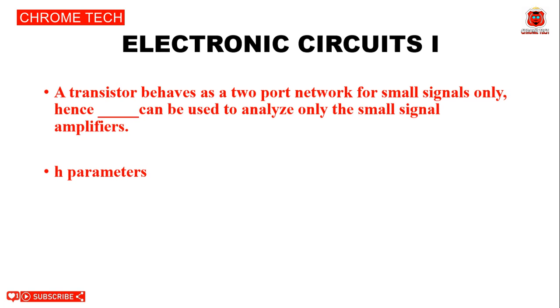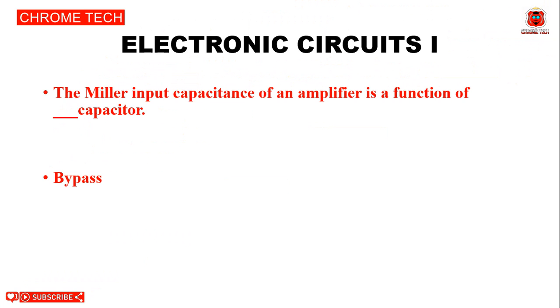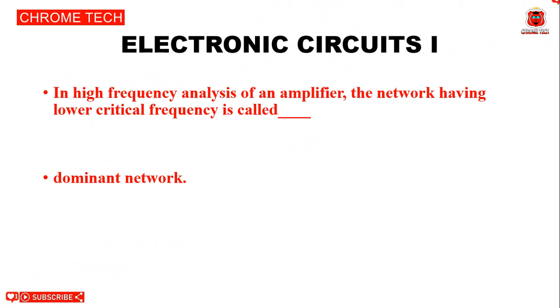Next question: The Miller input capacitance of an amplifier is a function of the dash capacitor. The answer is bypass capacitor.